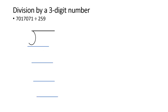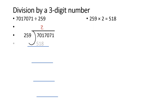Let us take one more question: 17,071 divided by 259. Write it in long division form and use estimation. Assume 259 is approximately 250, since knowing the 25-times table is very helpful. Ask how many 250s fit in 1707: 250×2=500 and 250×3=750. Check 259×2=518. Write 2 and 518, subtract, bring down 7 to get 1837.